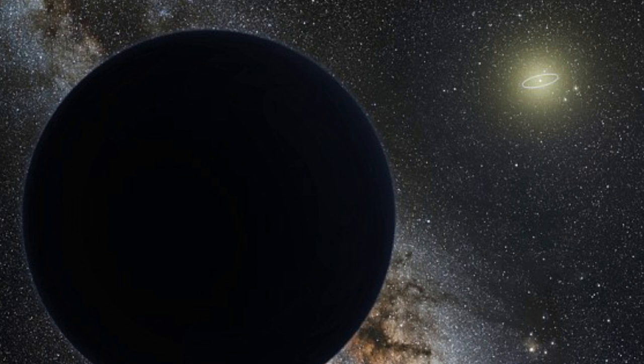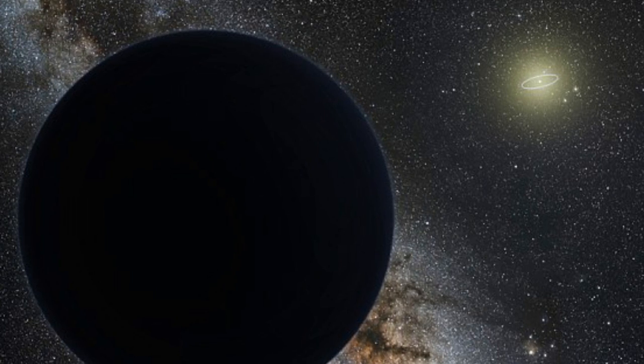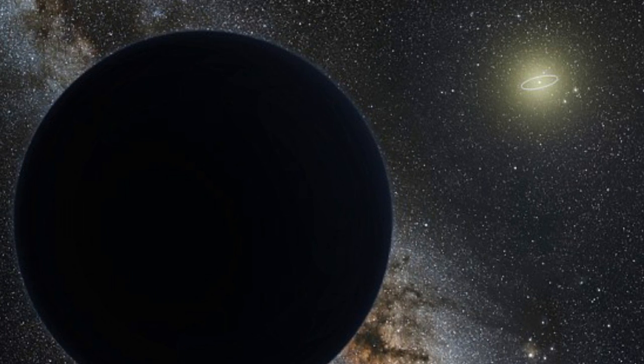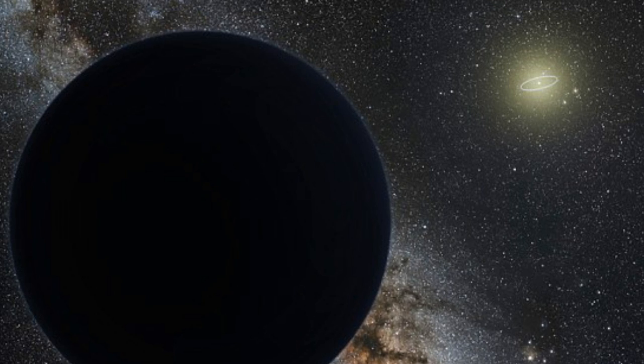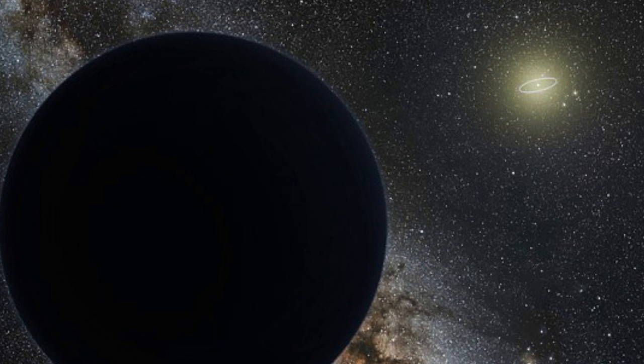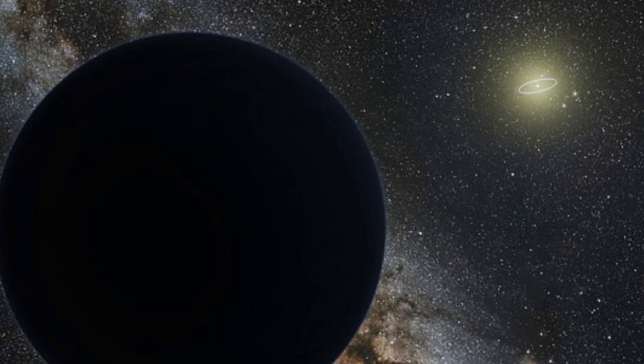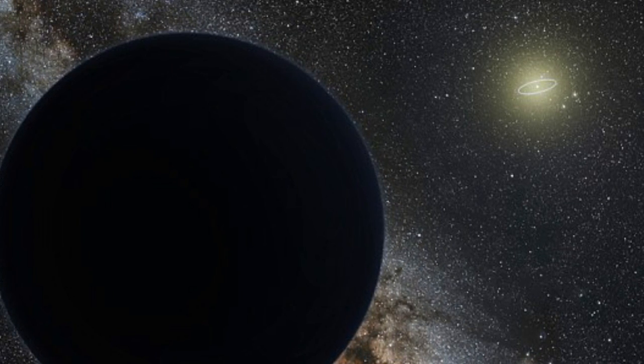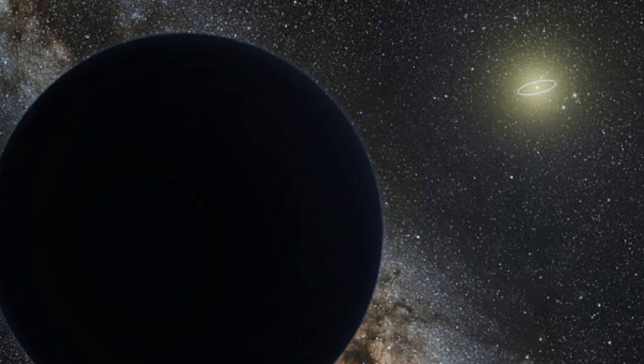At first the astronomers thought it could be the hypothetical Planet 9 that astronomers have been hunting for far beyond Pluto on the farthest edge of the solar system. However, they found NIKU and its fellow tiny worlds are too close to the rest of the solar system to have been tugged out of place by this theoretical planet.